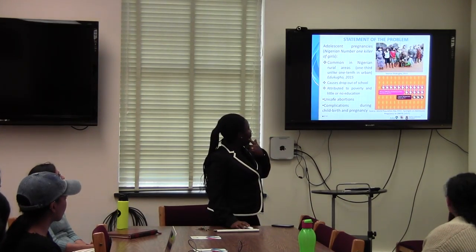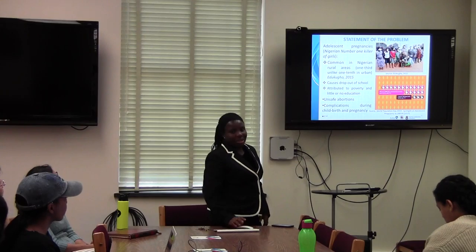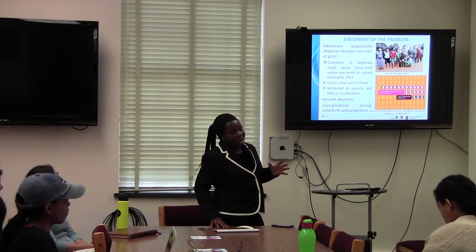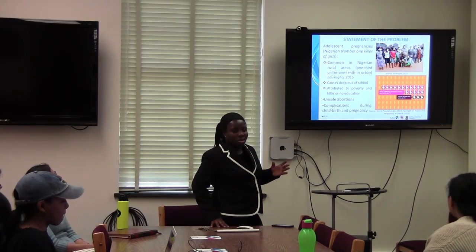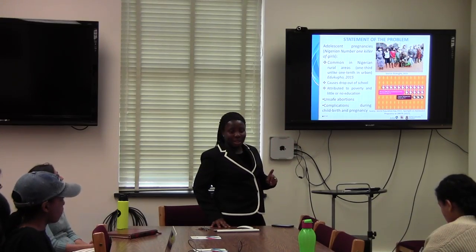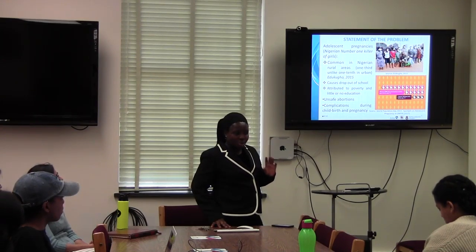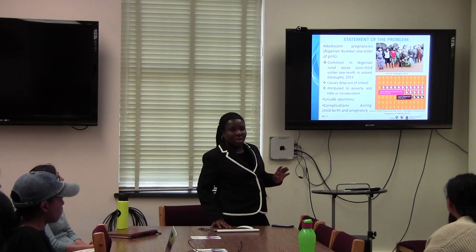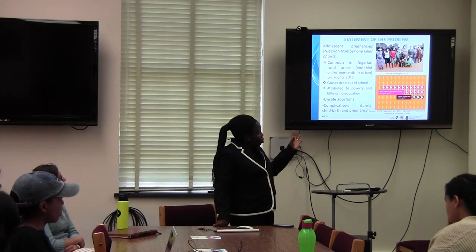Statement of the problem. Teenage pregnancy is called Nigeria's number-one killer of girls because of the rate at which it is killing Nigerian girls. In rural areas, one out of 30 girls has a teenage pregnancy, but in urban areas it is one out of 10 — so it is more common in rural areas. It causes school dropout: immediately a girl is pregnant, she will be advised to withdraw, even if she is the best student in the class. It is attributed to poverty and little or no education.